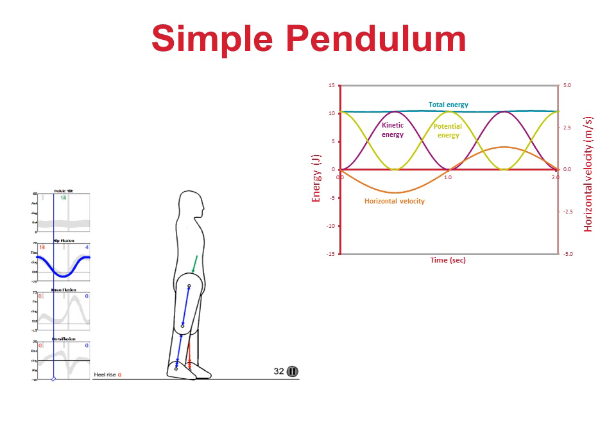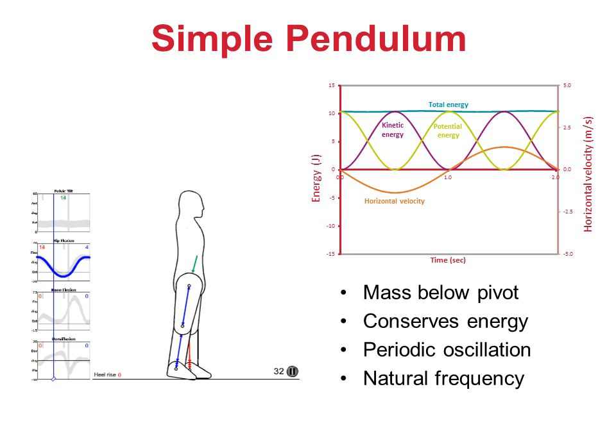Just to recap, in a simple pendulum, the mass is below the pivot. The pendulum conserves energy, there is a periodic oscillation, and this occurs at a specific natural frequency.